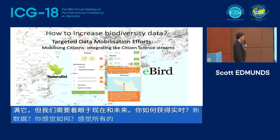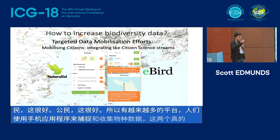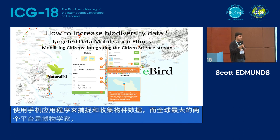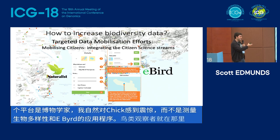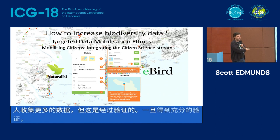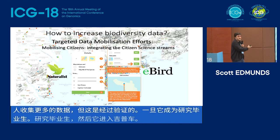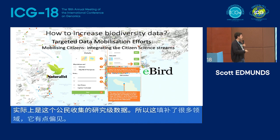You can use citizens, which is great. There are more and more platforms — people using mobile phone apps to capture and collect species data. The two really big ones globally are iNaturalist, a NatGeo app that measures all kinds of biodiversity, and eBird. The bird watchers are just out there collecting more data than anybody else. This data gets validated, and once it gets sufficient validation it becomes research-grade and feeds into the GBIF database. This is now the biggest source of data — citizen-collected research-grade data — though it is a bit biased to things like birds.